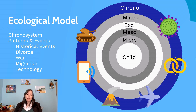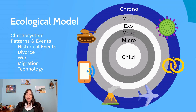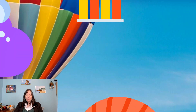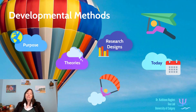These areas — child factors, microsystem, mesosystem, exosystem, macrosystem, and chronosystem — all work together to influence kids. That gives us a broad overview of how these different areas of psychology can all influence this one discipline of developmental psychology today.